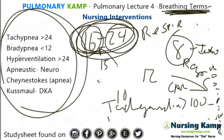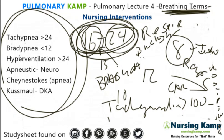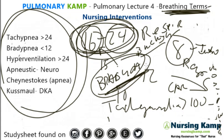I also have another cardiac lecture called bradycardia — the mnemonic is 'black 3D glass' — where I talk about all the reasons why a patient is bradycardic. The key understanding is that bradycardia is less than 60. That's the same premise we apply to breathing terms.